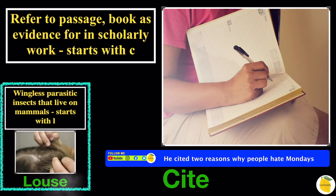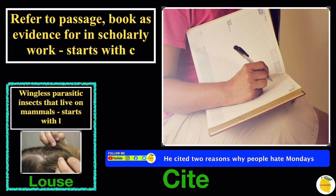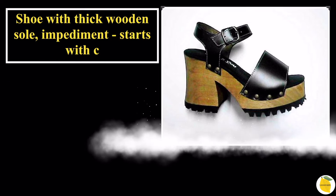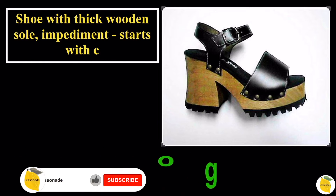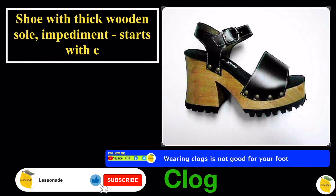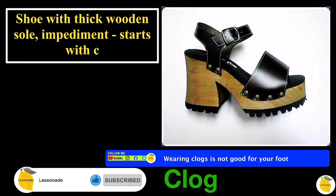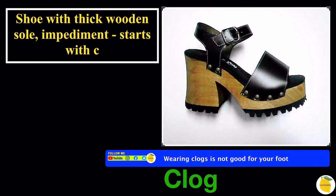A shoe with a thick wooden sole; also means impediment — starts with C. In this picture we can see a shoe with a thick wooden sole, so the word is going to be 'clog'. The sentence is: wearing clogs is not good for your foot. The previous slide was 'cite'.